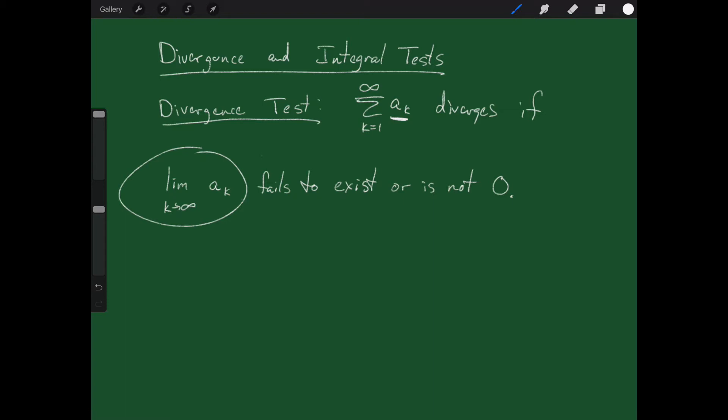If the limit is not zero, it diverges — we're done, completely done. The reason is: if something has hope of adding up to a nice number, eventually the numbers have to start getting small. If you add 1 plus 1 plus 1, you get infinity. A half plus a half plus a half is infinity. Even 0.1 plus 0.1 plus 0.1 is infinity. They have to get very small very quickly to actually add up to a number.